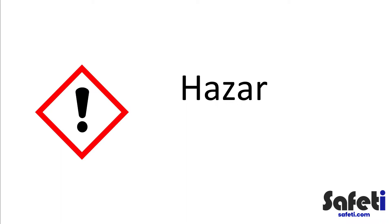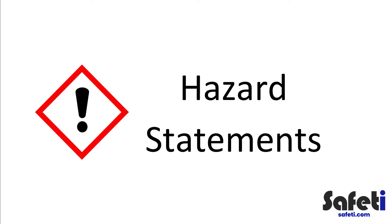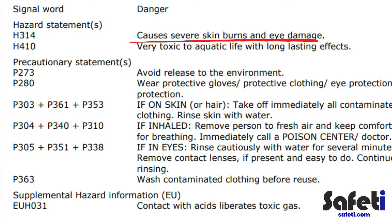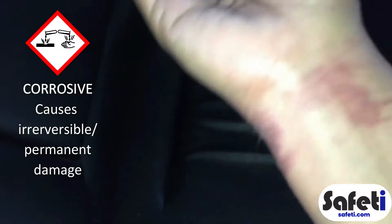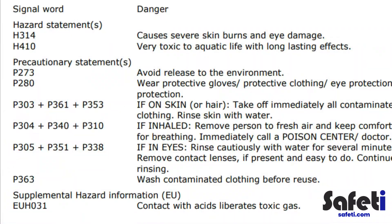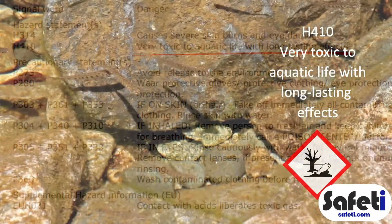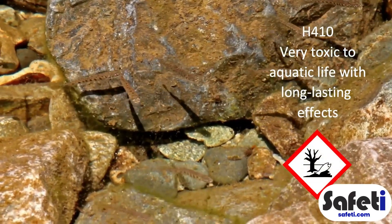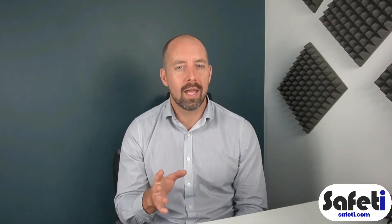For our sodium hypochlorite example there are a couple of key hazard statements to sum up the risks. The first code, as you can see on screen, means the substance causes severe skin burns and eye damage. As discussed in our previous hazard symbols video, harm from corrosive materials is likely to be irreversible or result in permanent damage. The second code shows potential damage to the aquatic environment — the solution is very toxic to aquatic life with long-lasting effects. Those hazard statements give us more context on the types of risk presented, and that brings our attention to the next part of hazard identification: precautionary statements.